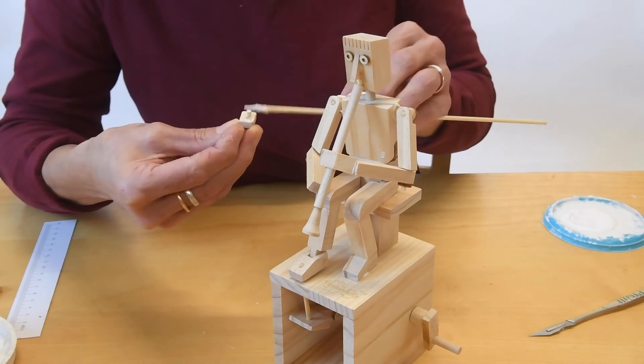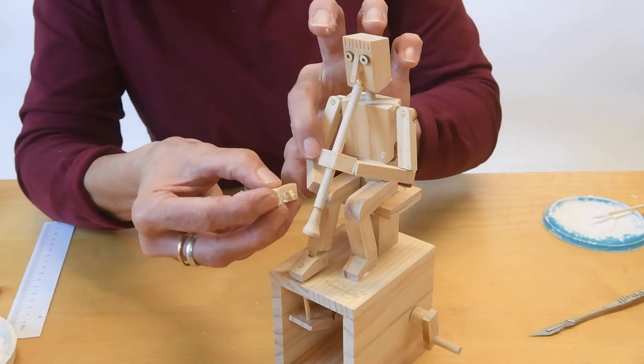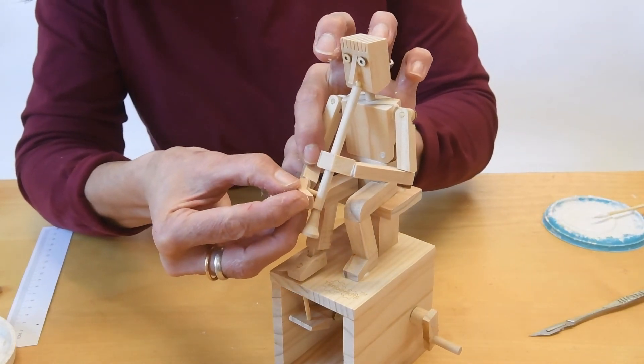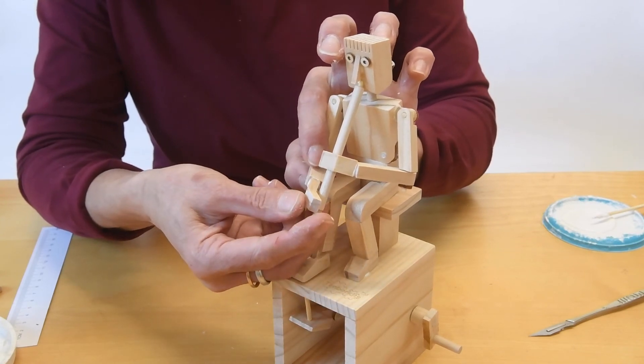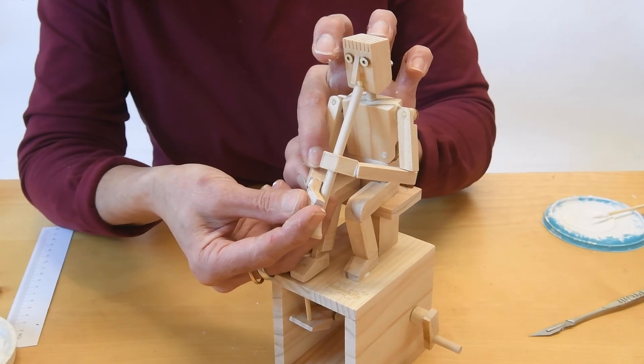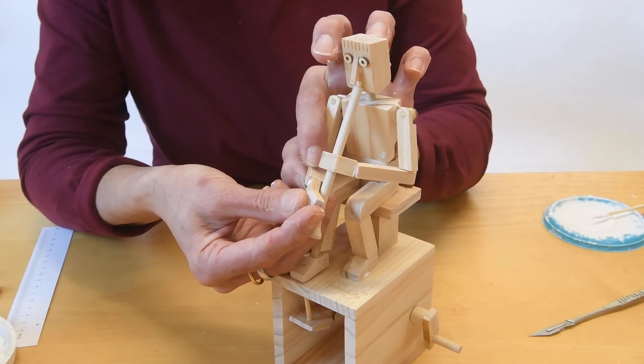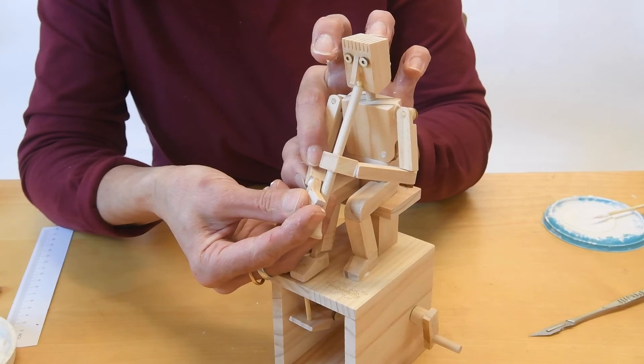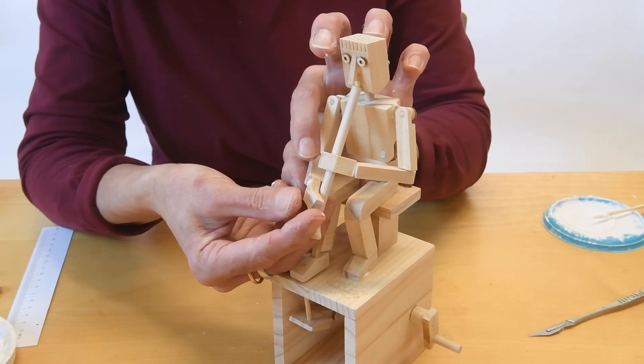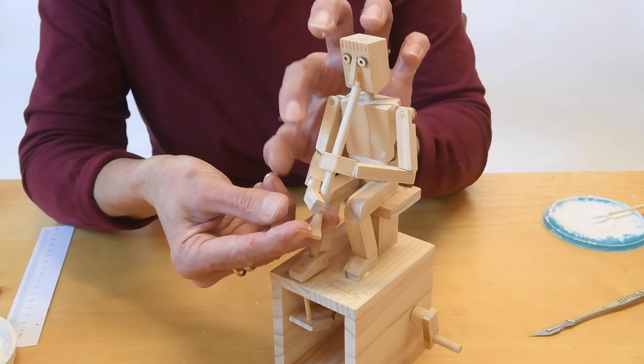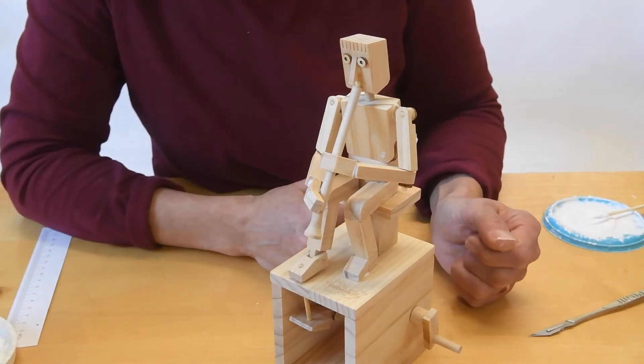So get the hand glued and ready. At a slight angle there. And rest it on the instrument and hold for a minute, until it's safe to let go, and leave it to dry.